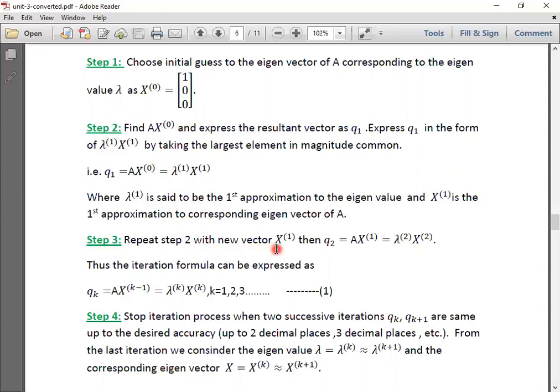Step 2 with the new vector X₁. So that we find A times X₁, then we express it as some Q₂. And we express Q₂ in the form of lambda X, that is to be taken as lambda₂ X₂ by taking the largest element common from the resultant vector Q₂. So that Q₂ equals A times X₁ equals lambda₂ X₂.